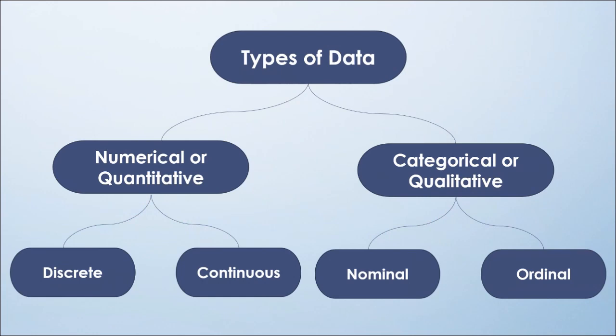Let's see now the types of data. Data could be numerical or quantitative, which refers to any information that can be quantified, counted, or measured and given a numerical value. Qualitative or categorical data is descriptive in nature, expressed in terms of language rather than numerical values.